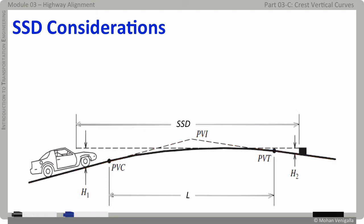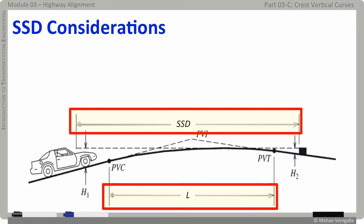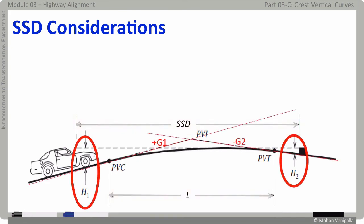In this particular case, which is a crest curve, we see SSD is greater than L, but it won't always be the case. Depending on the speed and grades G1 and G2, stopping distance can either be greater than the length of the curve L, like in this case, or it can be less than L. Either way, the minimum length of the curve is dictated by how far the driver can see on the other side of the crest. So, in addition to stopping sight distance, other variables in consideration to determine minimum length of the crest curve are G1 and G2, and H1 and H2.